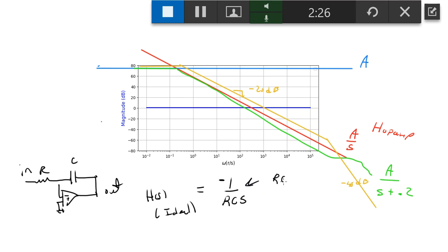And if the RC product equals 1, we just really have minus 1 over S, and the magnitude is really going to be 20 dB per decade. And it's going to equal 0 dB when omega equals 1.